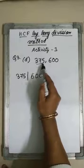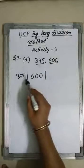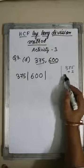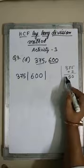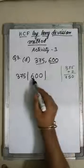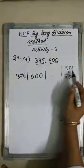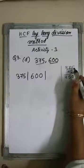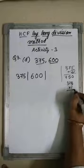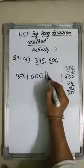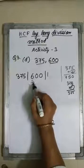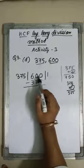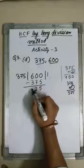The smaller number is 375 and the bigger number is 600. I shall divide 600 by 375. 375 into 2 is 750, which is greater than 600, so I cannot write 2. I write 1 as quotient. 375 into 1 equals 375. Subtracting: 600 minus 375. The result is 5, then 9 minus 7 is 2, then 5 minus 3 is 2, giving remainder 225.